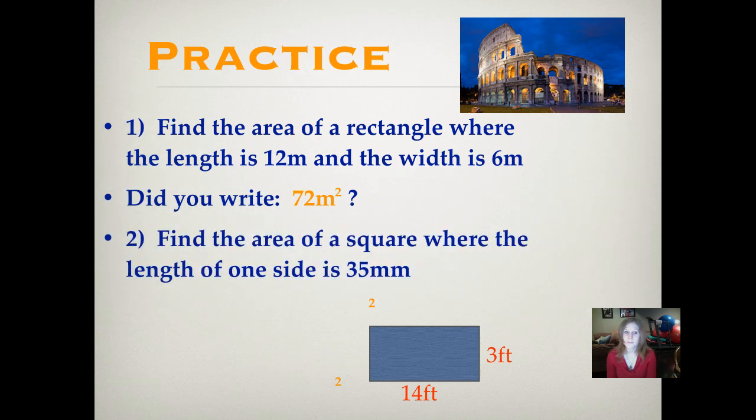Number two, find the area of a square where the length of one side is 35 millimeters. It's a square. That should give you some important information about what the length and width of that square are. Did you write 140 millimeters squared? 35 times 35, because remember, in a square, all sides have the same length. So 35 times 35 is 140 millimeters squared or 140 square millimeters.